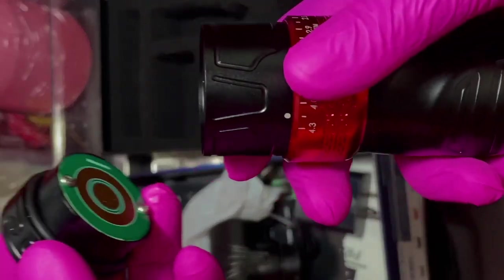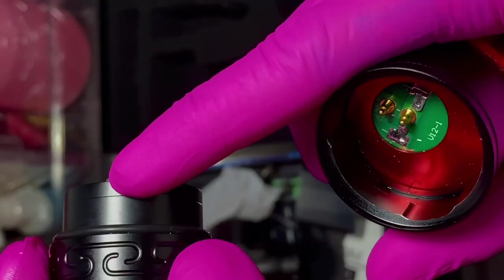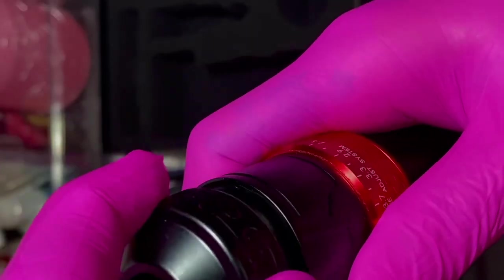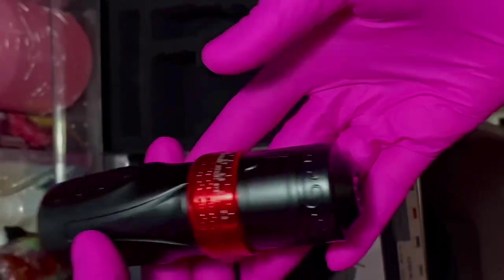To put the RCA adapter, just put it on the same way. You have to line up the little ridges into the parts and just give it a little twist.